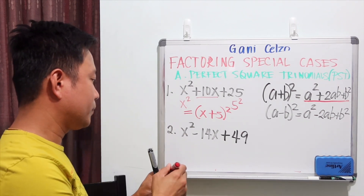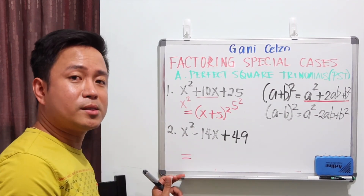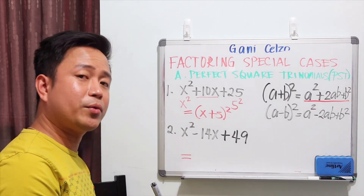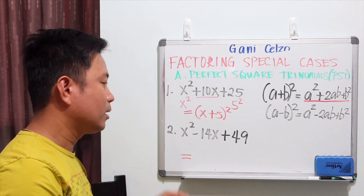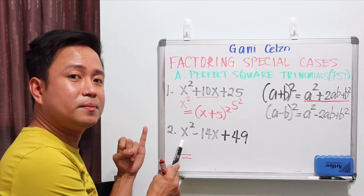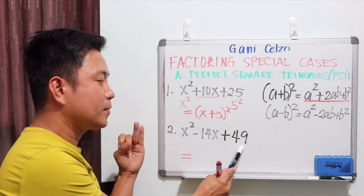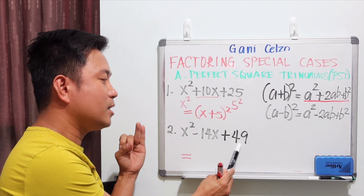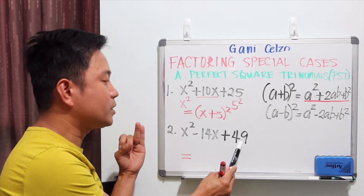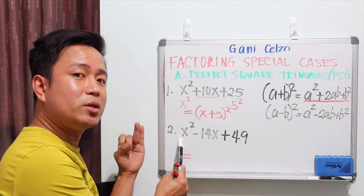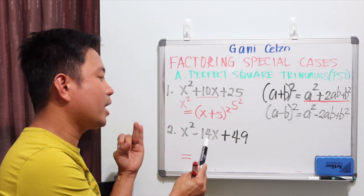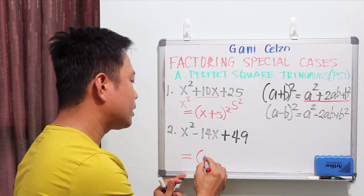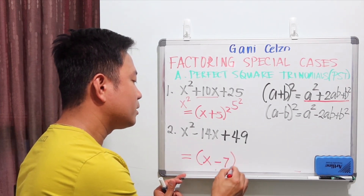For number two, is this a PST? Check three things: is the first term a perfect square? Is the third term a perfect square? Check — it is 7 squared. So 7 times x is 7x; you double it, is it negative 14x? And it is. Therefore, we write the answer as (x - 7)².